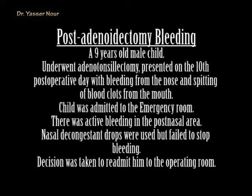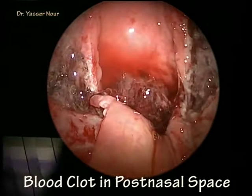He was admitted to the ward and within half an hour was taken to the operating room. After induction of anesthesia and insertion of the endotracheal tube, active bleeding started and the mouth was full of fresh blood. The nasopharynx was exposed by inserting a catheter inside the nose to retract the soft palate and expose the nasopharynx using a 45-degree lens.